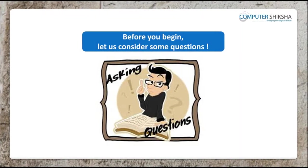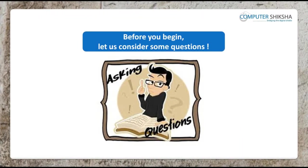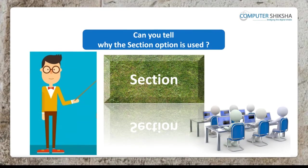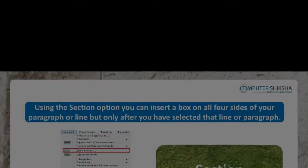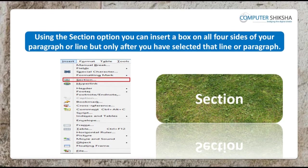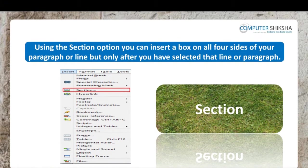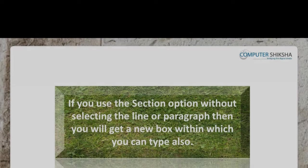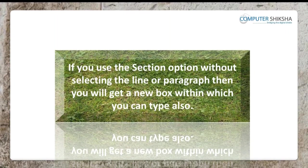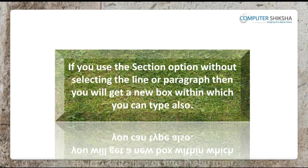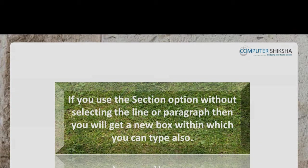Before you begin, let us consider some questions. Can you tell why the section option is used? Using the section option, you can insert a box on all four sides of your paragraph or line, but only after you have selected that line or paragraph. If you use the section option without selecting the line or paragraph, then you will get a new box within which you can type also.